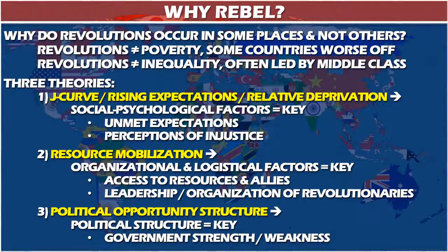The last set of theories emphasizes what's called the political opportunity structure: it's really about whether the government — not the revolutionaries — is strong or weak. If you have a weak government, it doesn't matter what the revolutionaries are doing; it will collapse under its own weight. If you have a strong government with a strong police and military, they won't have much difficulty dealing with most revolutionary threats. The key difference between countries is how well the state can react to challenges to its power.